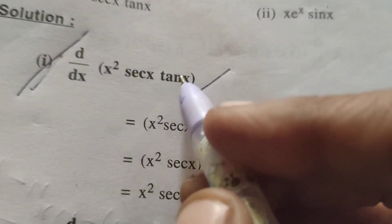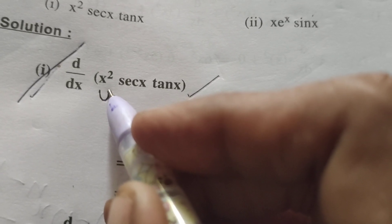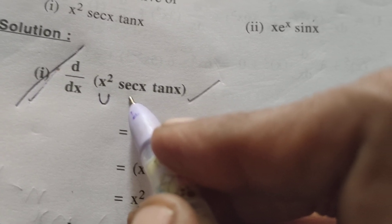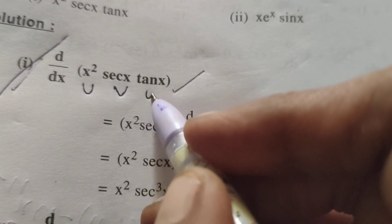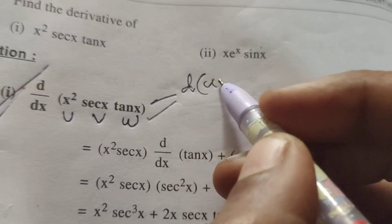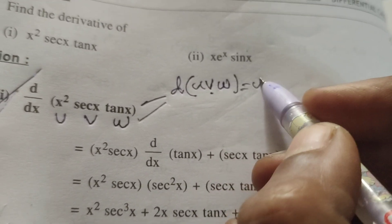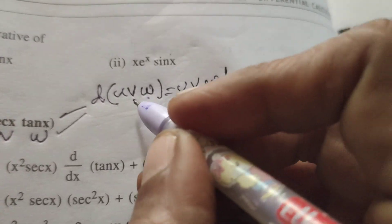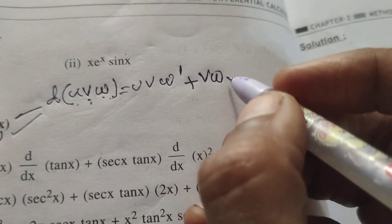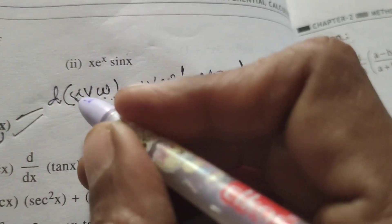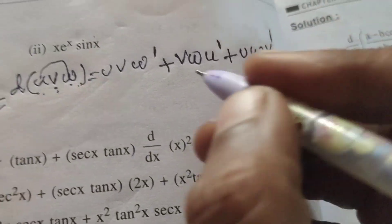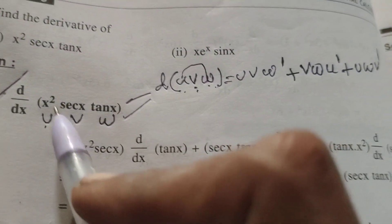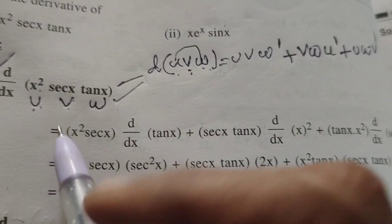Now differentiating this function — here there are three functions given. So using the differentiation formula for u·v·w: differentiation of u·v·w means u·v is constant, differentiate w (that is w dash), plus v·w is constant, differentiate u (u dash), plus u·w is constant, differentiate v (v dash). This is the formula.